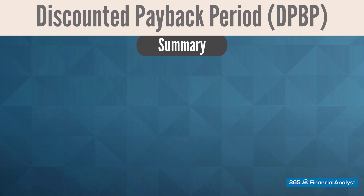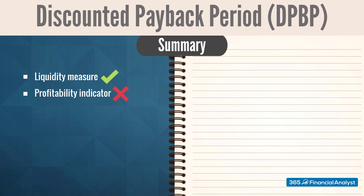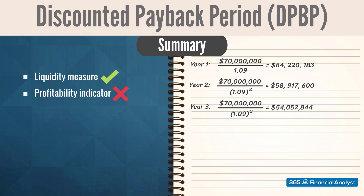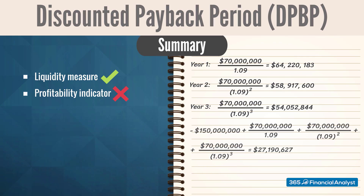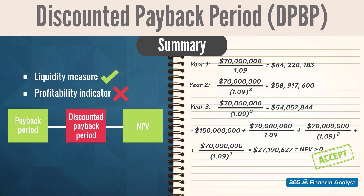To sum up, we should use the discounted payback period mainly as a liquidity measure and not as a profitability indicator. If we have already gone to the trouble of discounting the cash flows, you might as well just add up all the discounted cash flows, calculate the NPV, and use it to make a decision. Although discounted payback looks a bit like NPV, it is a poor compromise between the payback method and the net present value. We should never use it in isolation, but instead supplement it with other measures such as NPV and IRR to avoid making wrong decisions.